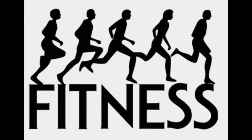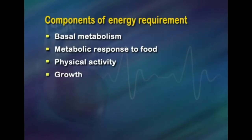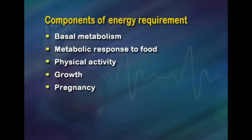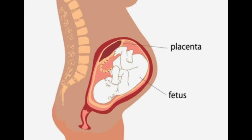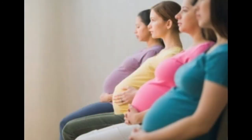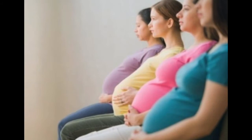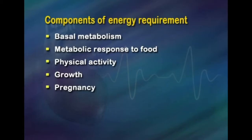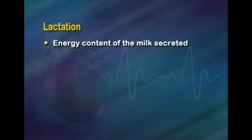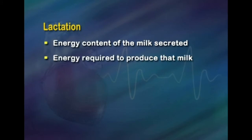Physical activity is the most variable and, after BMR, the second largest component of daily energy expenditure. Humans perform obligatory and discretionary physical activities. Growth has two components: the energy needed to synthesize growing tissues and the energy needed for deposition in those tissues. During pregnancy, extra energy is needed for growth of the fetus, placenta, and various maternal tissues such as uterus, breast, and fat stores, as well as for changes in maternal metabolism and increased maternal effort at rest and during physical activity. Lactation has two energy cost components: the energy content of milk secreted and the energy required to produce that milk.